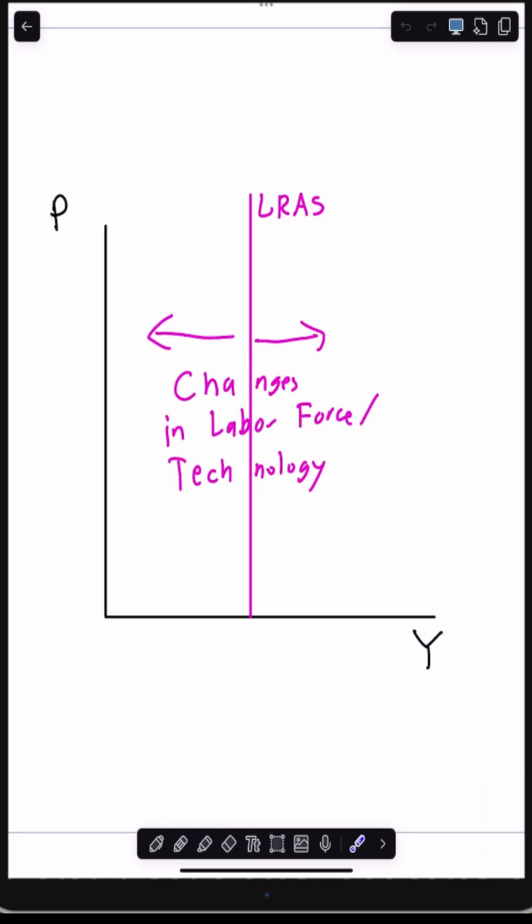The long-run aggregate supply curve can also change. It's going to change based on labor force and technology. So if more people enter the labor force or technology gets better it's going to move that way and if people leave the labor force or technology gets worse then it's going to move that way.